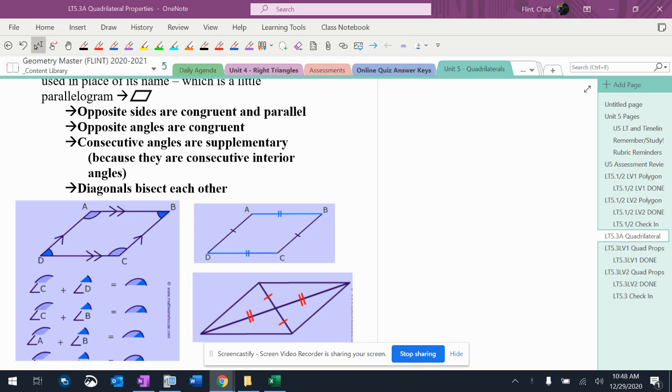Parallelogram has some basic properties that pretty much everybody knows. It's got opposite sides going parallel, and the other ones are all listed there. These properties are probably the most important ones to know because all of the rest of the shapes share these properties.